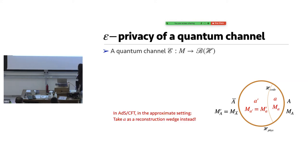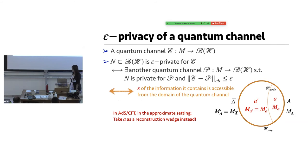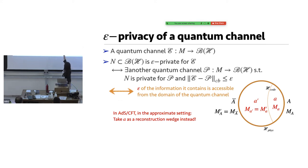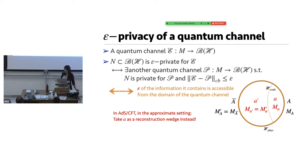We cannot really use the exact privacy because it had a dissipation with epsilon. So thankfully, there's a thing called epsilon privacy, which is what we're going to really utilize. Taking as a reconstruction measure instead, we're allowing with epsilon of the information to be accessible instead of being completely private from the domain of the quantum channel. So that explicitly has this epsilon, which is identical to our epsilon — that's how we're going to take so that it can deal with the approximate setting we're going to be utilizing.